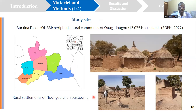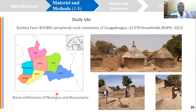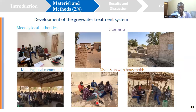The study was conducted in rural Burkina Faso, in the center part of the country in a commune known as Kubri. Specifically, it was conducted in two rural settlements known as Nungu and Busuma. The greywater treatment system was developed in a participatory manner.